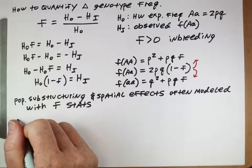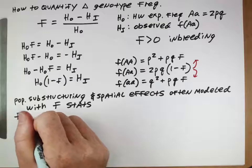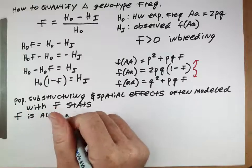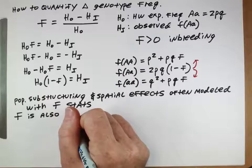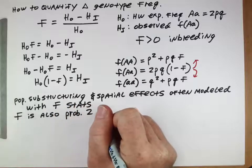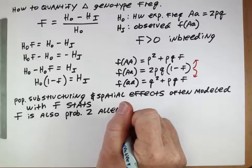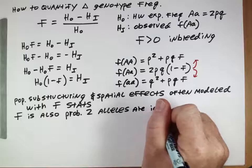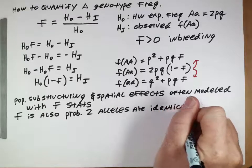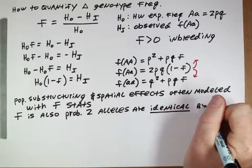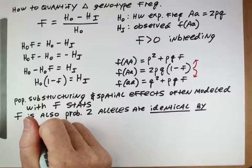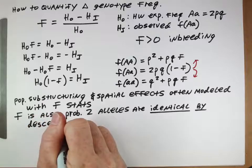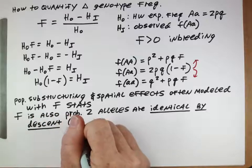This value F is also, and we won't go through the math of this, but it's also the probability that two alleles, if you choose them from the population, are what's called identical by descent, or IBD.